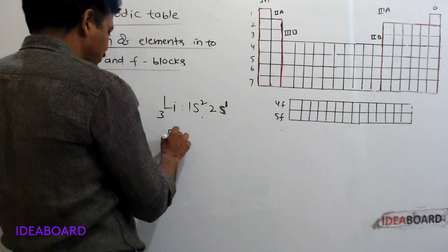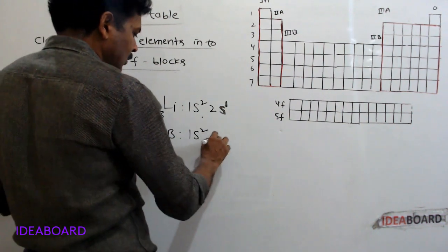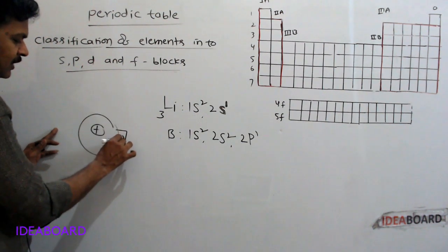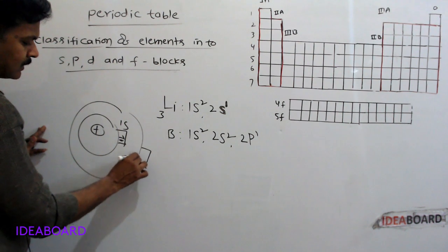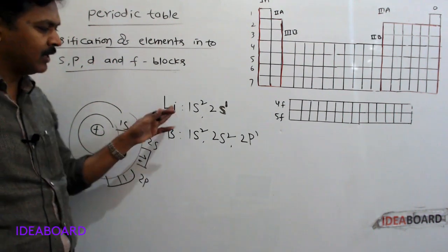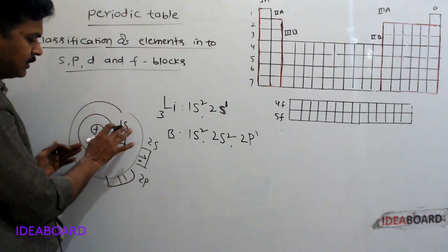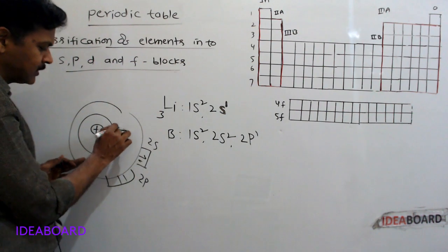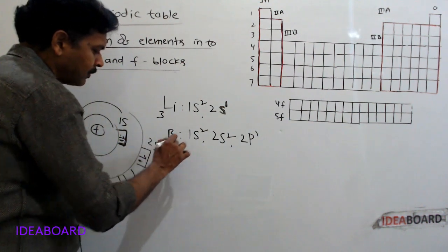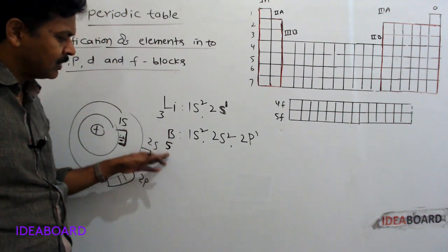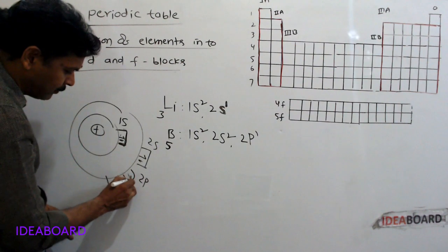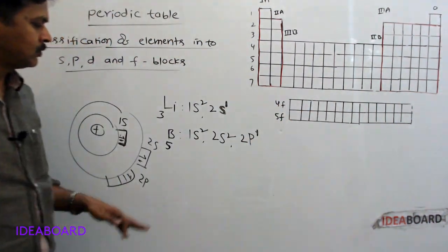For example, boron has atomic number 5. Its electronic configuration is 1s2, 2s2, 2p1. The first orbit contains only the S subshell (1s). The second orbit contains 2s and 2p. For boron, the last entering electron is present in the P orbital, so boron belongs to the P block.